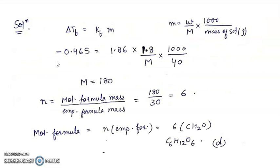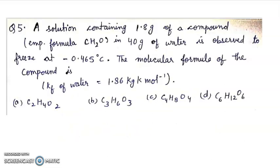In this question, delta Tf equals Kf m. Small m, we write the formula: given weight upon molecular weight into 1000 upon mass of solution in gram. Put the values to find molecular weight. It comes to 180. n equals molecular formula mass upon empirical formula mass, 180 by 30. Molecular formula is n times empirical formula, so 6 times CH2O is C6H12O6. Right answer will be D.